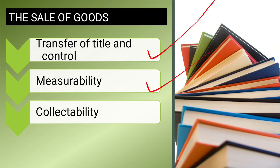If collectability is uncertain, revenue recognition from the sale of goods should be postponed. So the three conditions — transfer of title and control, measurability, and collectability — must all be satisfied. If measurability or collectability are uncertain, revenue recognition should be postponed.